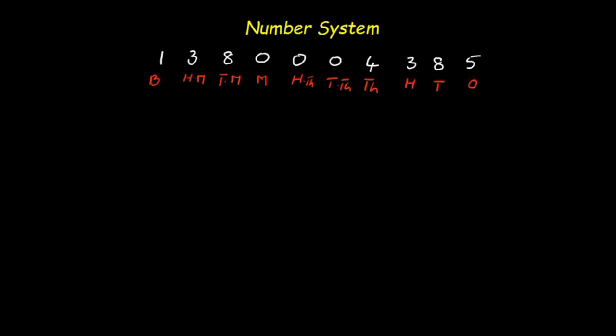Continuing in the international system: hundred thousand, millions, ten millions, hundred millions, and billions. Now it is easy to identify each digit's place. This portion belongs to the ones place — that is 385. This belongs to the thousands place, this to the millions place, and this is in the billions place.